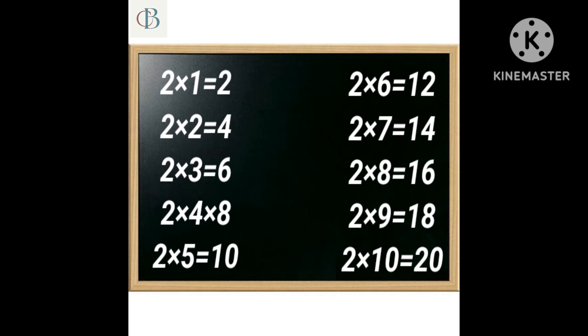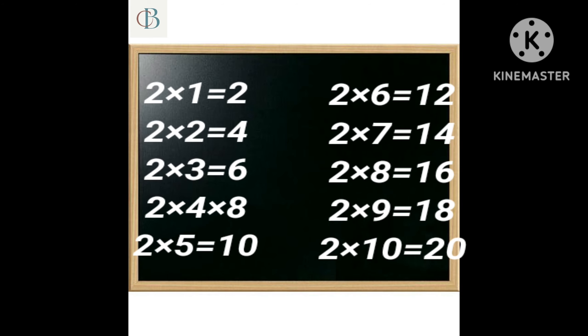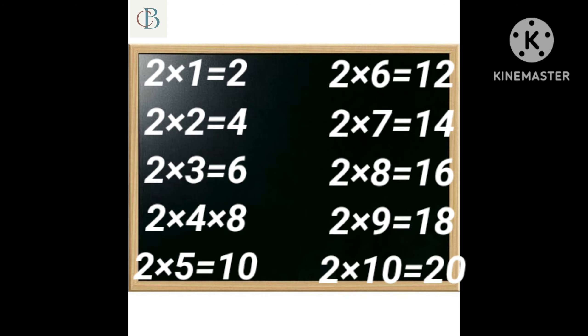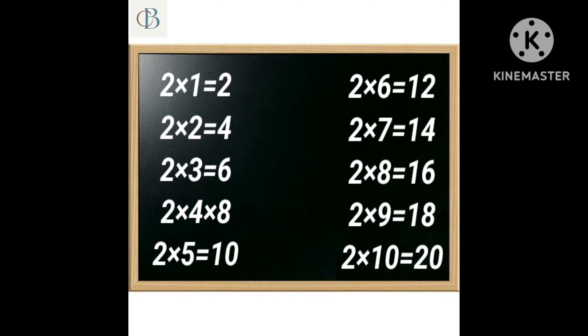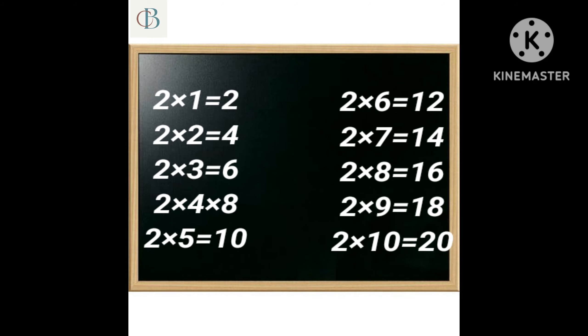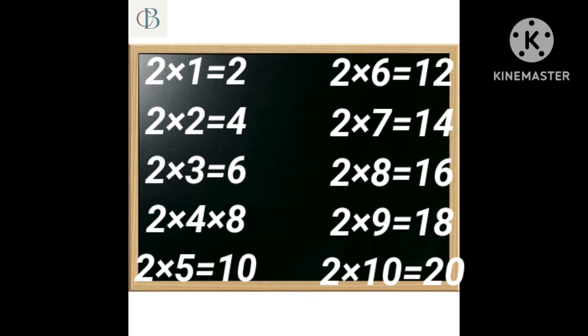2 1s are 2, 2 2s are 4, 2 3s are 6, 2 4s are 8, 2 5s are 10, 2 6s are 12, 2 7s are 14, 2 8s are 16, 2 9s are 18, 2 10s are 20.